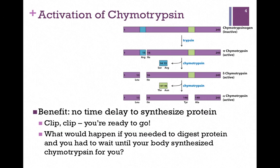The benefit of this type of activation is that the protein has already been synthesized and it's ready to go — it only has to be activated. Let's think for a moment about the benefit of that. Imagine if, instead of this, in order to have active chymotrypsin we had to actually synthesize the protein from scratch. Let's say you ate a nice big meal containing a hamburger. Remember, chymotrypsin digests peptide bonds, so we're going to need that enzyme.